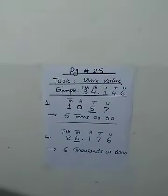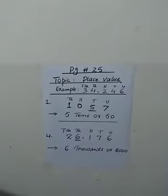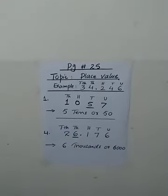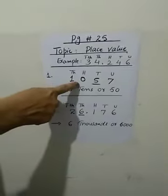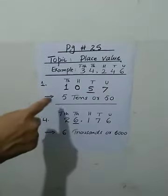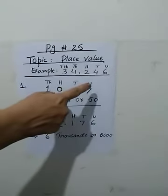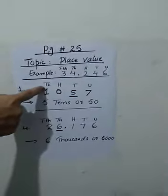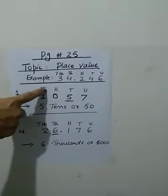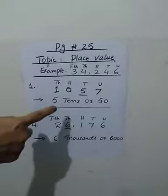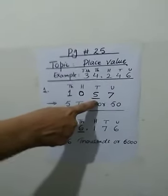Let us solve page number 25 of your worksheet pad. The question is: determine the place value of the underlined digit. Question number 1 is 1, 0, 5, 7. First write the place value on the given numbers: unit, 10, 100, 1000. The place value of the underlined digit 5 is 50.